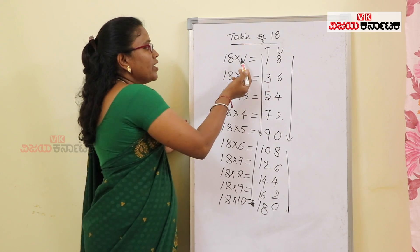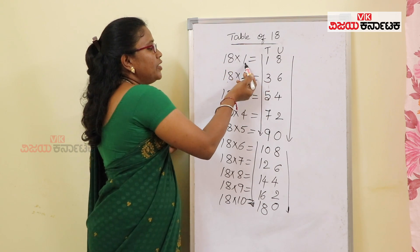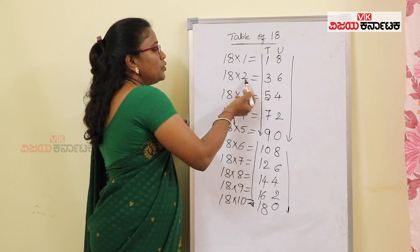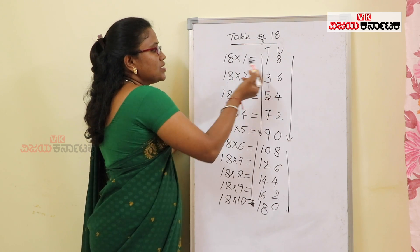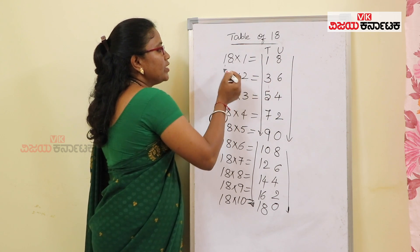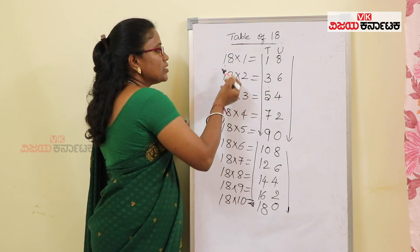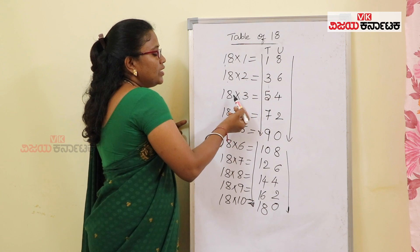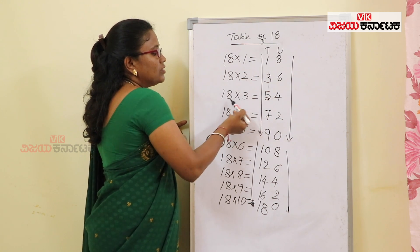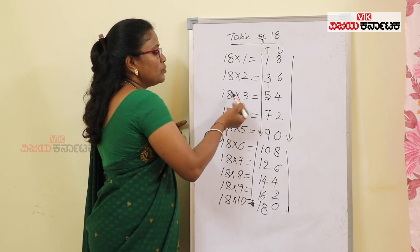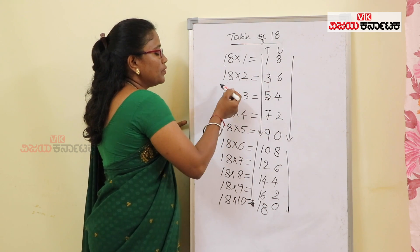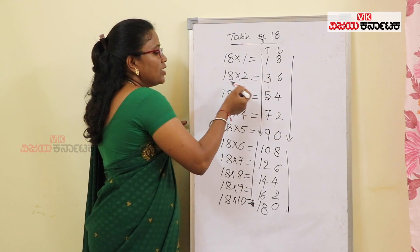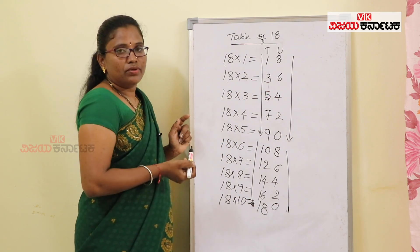1 8 is 8, 1 1 is 1, 2 8 is 16, 1 carry, 2 1 is 2, 2 plus 1 is 3. So this is how you multiply. 3 is 24, 2 carry, 3 is 3, 2 add 3 is 54.